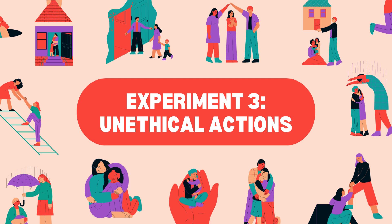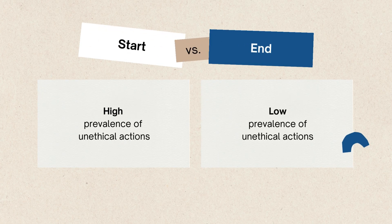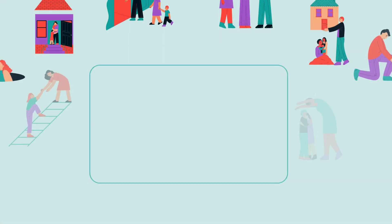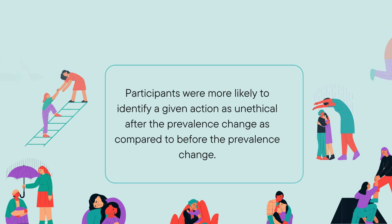In the third experiment, the researchers presented participants with a sequence of actions, each with a different level of unethicality, and instructed them to identify whether each action was unethical. For the first few actions, the researchers did not change the prevalence of unethical actions. However, for the last few actions, the researchers decreased the prevalence of unethical actions. The researchers reported that participants were more likely to identify a given action as unethical after the prevalence change as compared to before the prevalence change.